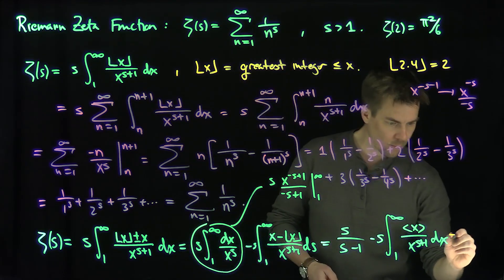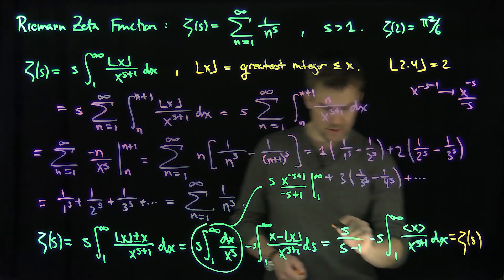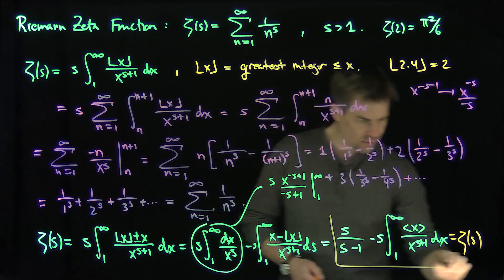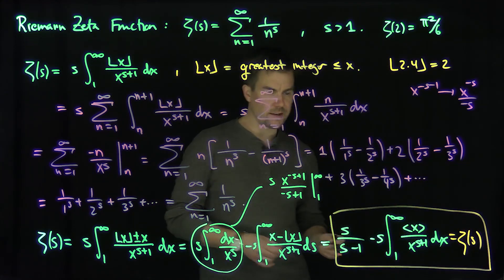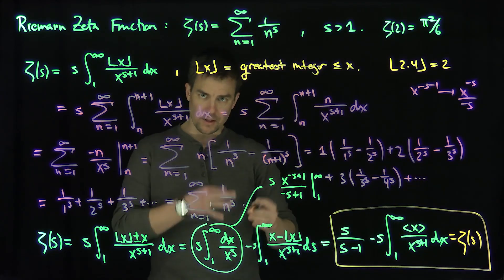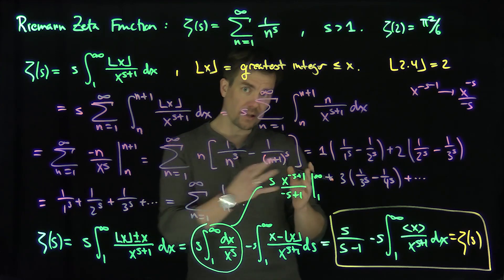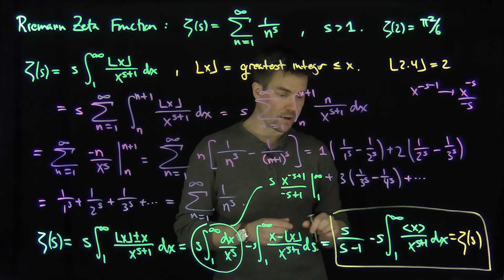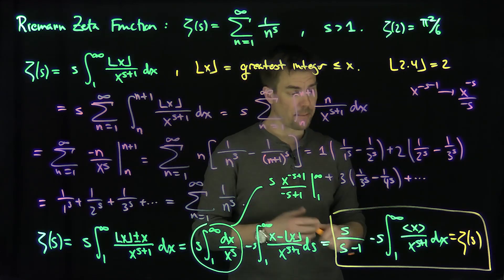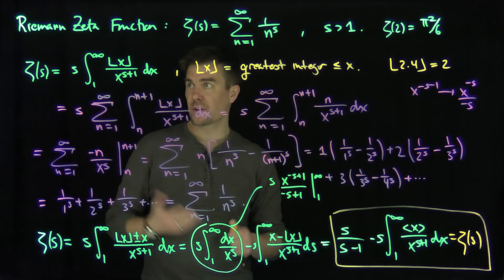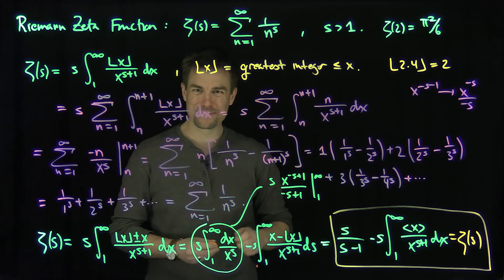So these are two integral representations of the Riemann zeta function. This formula exhibits a symmetry and hints at something interesting happening on the critical line s equals one-half when the function is analytically continued to the complex plane. Thank you very much.